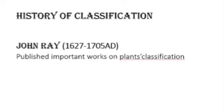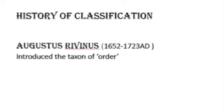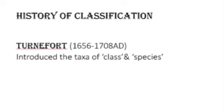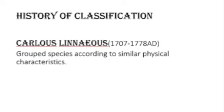Next comes John Ray, who published important work on plant classification. After him was Augustus Rivinus, whose major contribution was introducing the taxon of order. Then Chaini introduced the taxon of class.